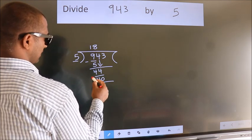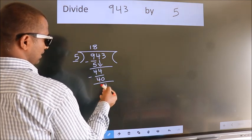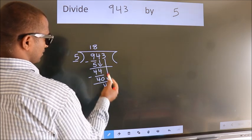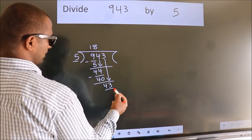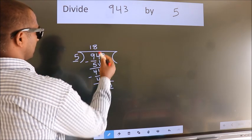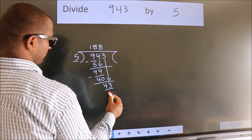Now we subtract. We get 4. After this, bring down the beside number. So, 3 down. So, 43. A number close to 43 in 5 table is 5 8s 40.